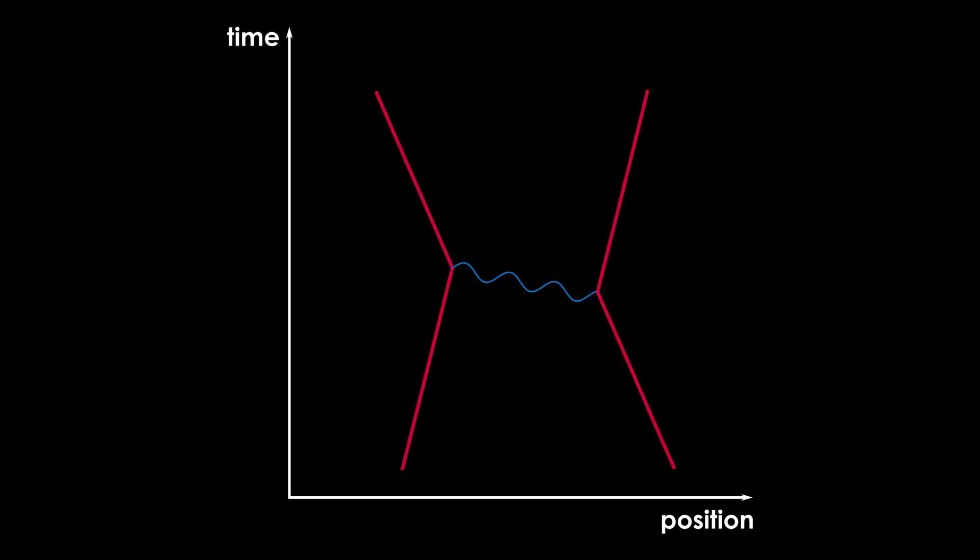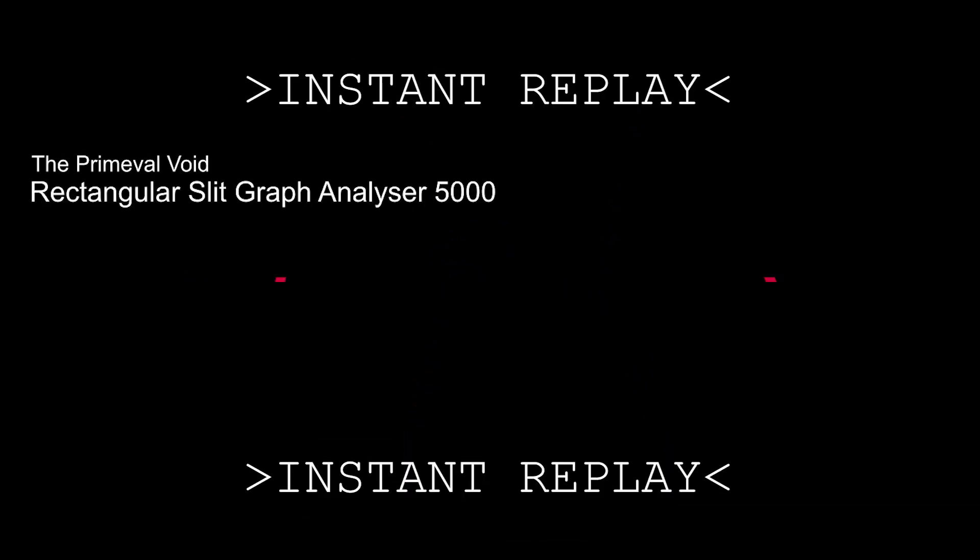Similarly, in our Feynman diagram the time axis is also upward so you have to move it along the time axis. Then you get this. Two electrons moving towards each other and one electron tells the other electron to move away. Amazing, right?